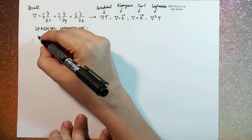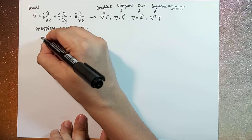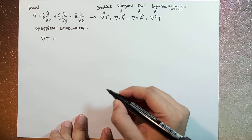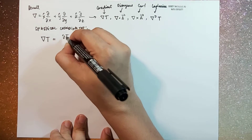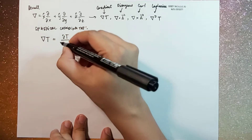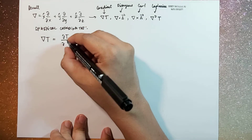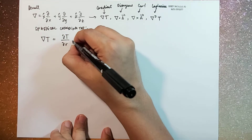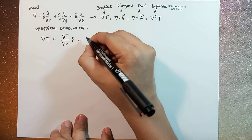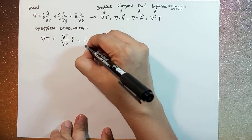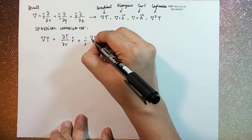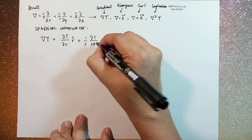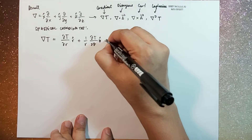In spherical coordinates, the gradient of a scalar potential T is given by the partial derivative of T with respect to r, times r-hat, plus 1 over r times the partial derivative of T with respect to phi, times phi-hat.